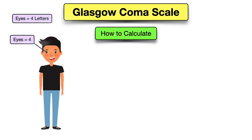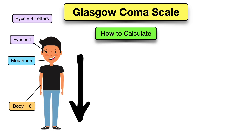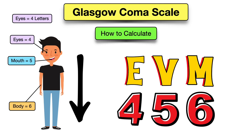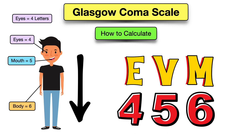Here's a simple memory trick to remember this. The word 'eyes' has four letters in it, and the max score is four. Then simply move down the body, adding one point for each. The eyes are four, then we move down to the mouth or verbal, which is five. Then we move down to the body or motor, which is six. So remember EVM-456.